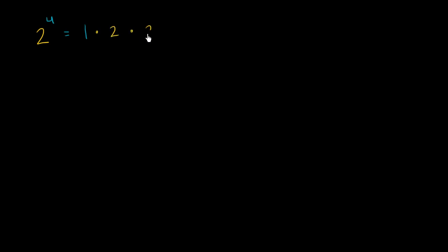We already know that 2 to the fourth power can be viewed as starting with a 1 and then multiplying it by 2 four times. So let me do that: times 2, times 2, times 2, times 2. 2 times 2 is 4, 8, 16. So that will give us 16.